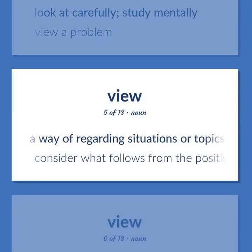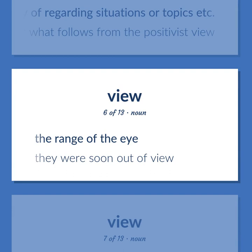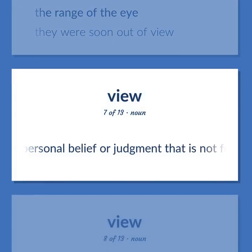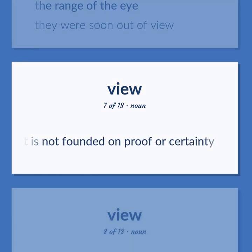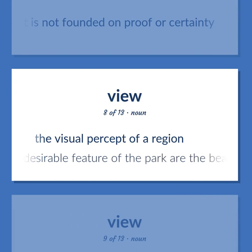View: A way of regarding situations or topics. Consider what follows from the positivist view. The range of the eye — they were soon out of view. A personal belief or judgment that is not founded on proof or certainty. The visual percept of a region. The most desirable feature of the park are the beautiful views.